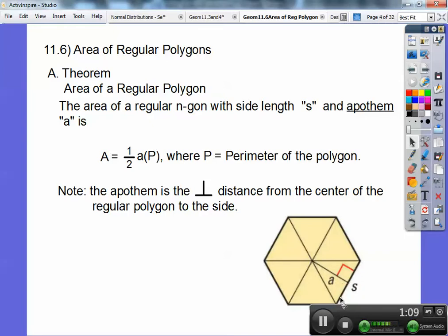And it ends up bisecting this side because this is a regular polygon, so it's an isosceles triangle. On hexagons, it's an equilateral triangle. Only on hexagons. This is the apothem right here. And here's the side length s. So in this case, the perimeter would be 6s, six times whatever that side length is.